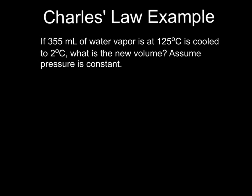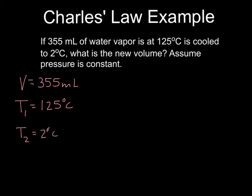Please take a moment and copy down this example. We're going to create another list of variables just like we did in the first example for Boyle's Law. If 355 milliliters of water vapor — there's a volume — at 125 degrees C, there's a temperature, gets cooled to a second temperature of 2 degrees C, what's the new volume? Because we're only talking about volume and temperature and they're changing, we know that this is a Charles' Law problem. It's very important to be able to distinguish which law you need to use for each problem.